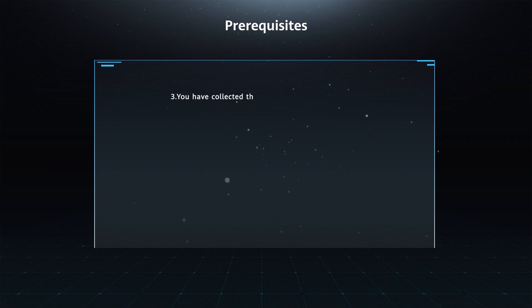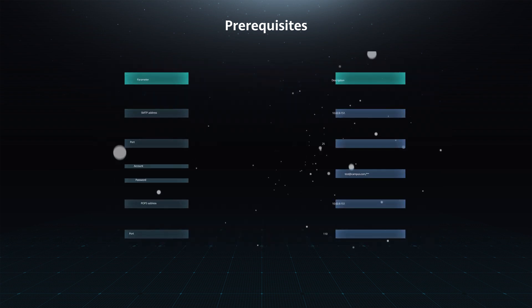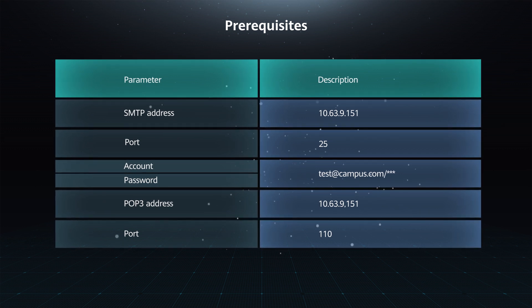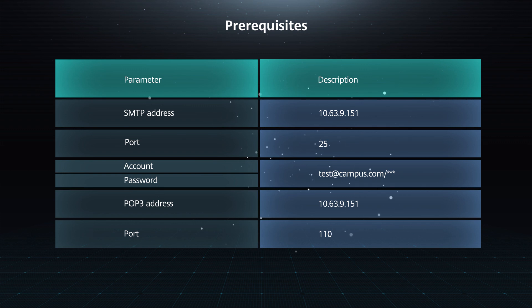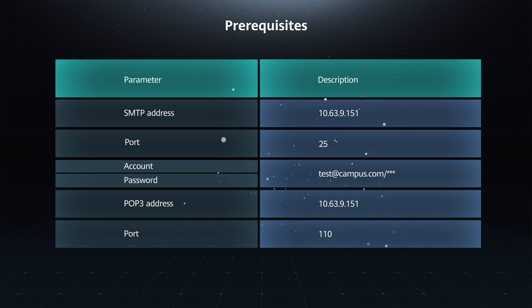3. You have collected the email server information. Parameters: SMTP Address: 10.63.9.151, Port: 25, Account: test.port@campus.com, Password: ***, POP3 Address: 10.63.9.151, Port: 110.